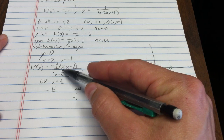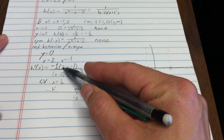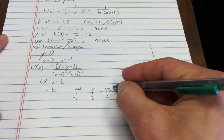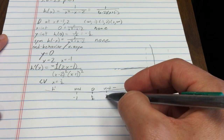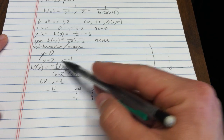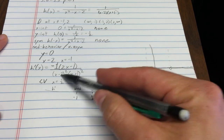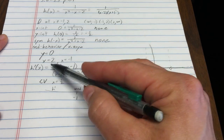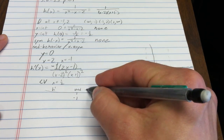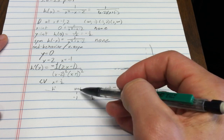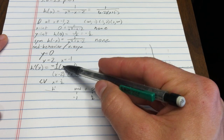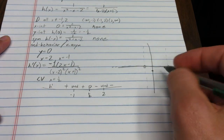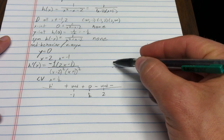Now let's check the sign of the derivative between those critical points. The squared terms in the denominator are always positive, so the sign depends on the numerator. For x greater than 2: negative over positive — negative. Between 1/2 and 2: negative over positive — negative. Between negative 1 and 1/2: the numerator is positive — positive. For x less than negative 1: positive over positive — positive.